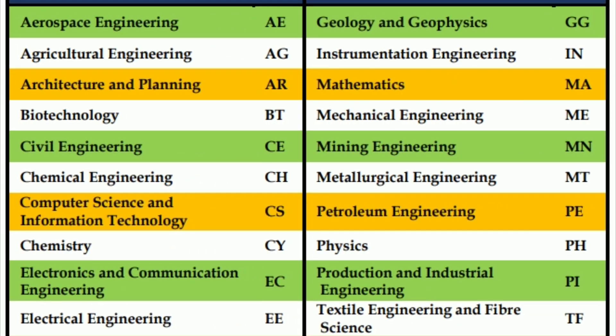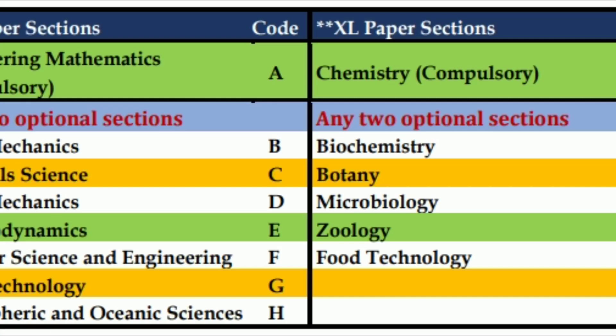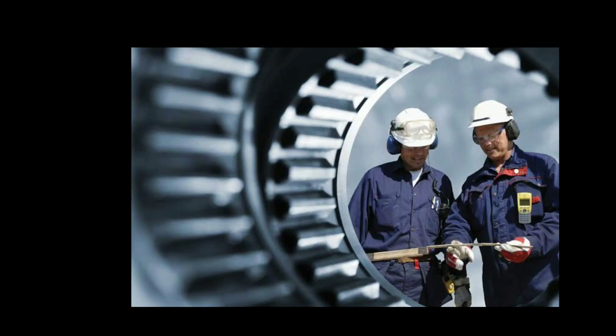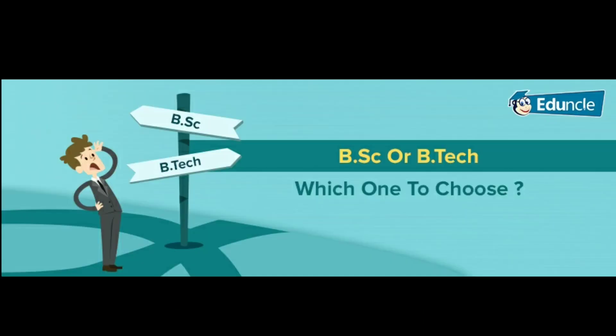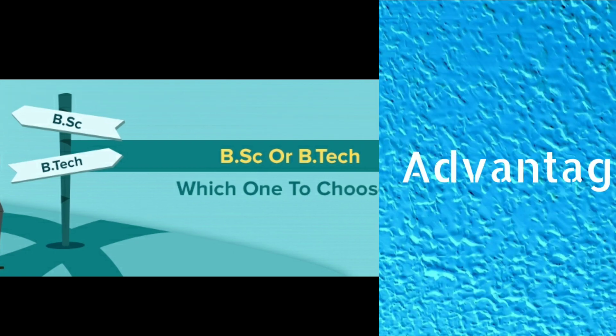There is a total of 24 papers currently as of 2019, and you are permitted to choose only one paper from the 24 — take a look. Many people think that GATE is only for engineering students, but that is wrong. GATE can be written by those studying in their final year of BE, B-Tech, B-Arch, BSc, Biotechnology, Food Technology, etc.